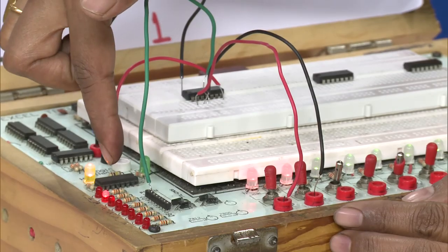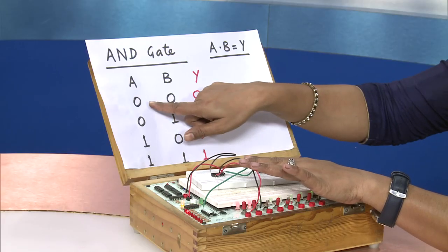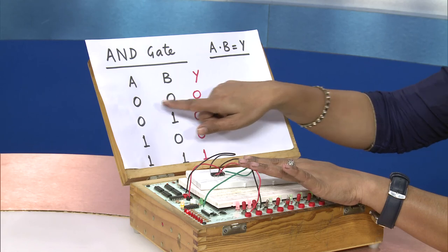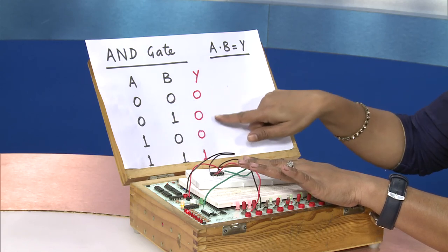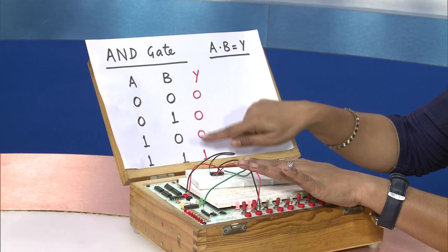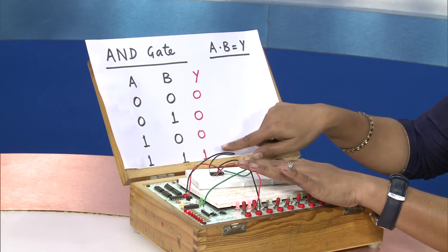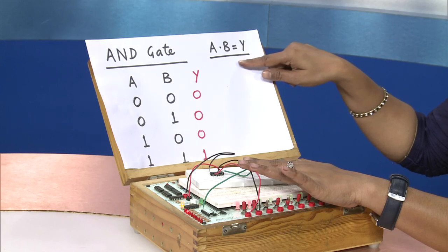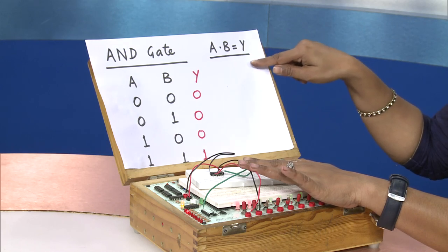For the AND gate, whenever any one input is zero the output equals zero. Only when both A=1 and B=1 is the output 1. The Boolean expression A·B = Y is verified. In today's class we discussed AND gates, verified the circuit, and experimentally verified the truth table. Thank you learners.